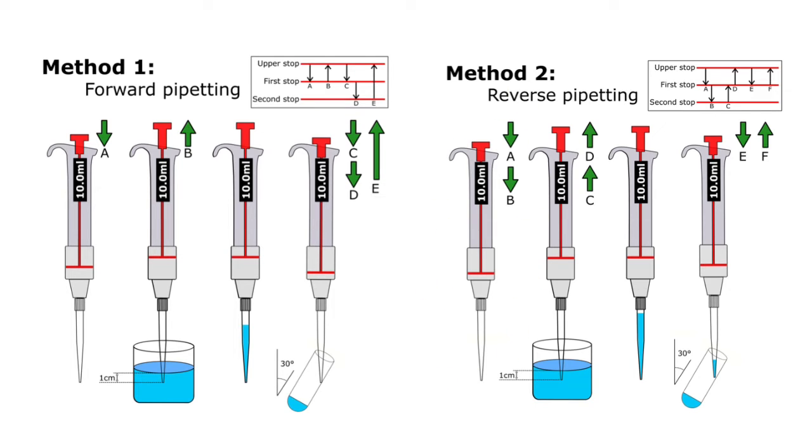You have to hold the pipet vertically, depress the plunge button to the first stop, A, and then to the second stop, B. As you see, this first step is different from the first method, where we only go to the first stop. Here we go to the second stop.